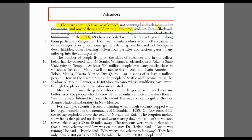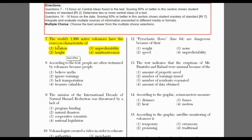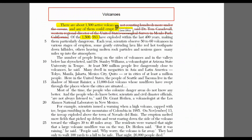Already I think I have the answer figured out, but remember there's another mention of 1,500. I'd better look at that too, in case the test writer is being really tricky. The second sentence reads: of the 1,500, 583 have exploded within the last 400 years, making them particularly dangerous. What this sentence is saying is that not all 1,500 volcanoes have exploded — only 583. Since the question wants to know what they have in common, and this statement is talking about a difference, I know that this too is irrelevant. So I'm pretty sure the answer is that they can erupt at any time.